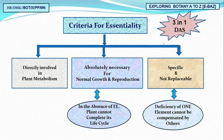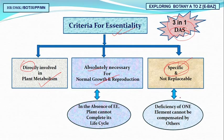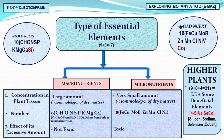To determine if an element is truly essential, we use the DAS criteria: D stands for directly involved in plant metabolism. Essential elements must be absolutely necessary for growth and reproduction and cannot be replaced — if replaced, there will be a deficiency syndrome of that particular element. We also studied mnemonics to remember the nine macronutrients: C, O, R, N, S, P, K, Mg, Ca.